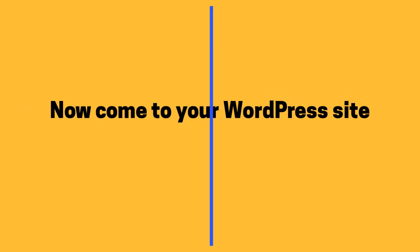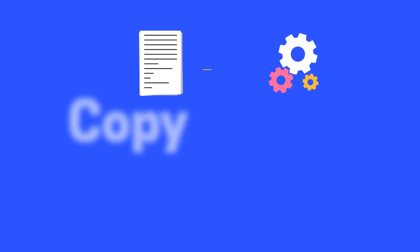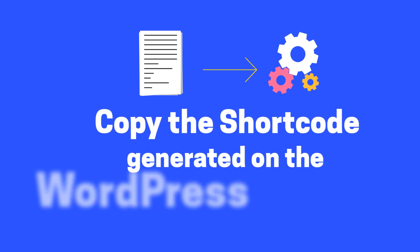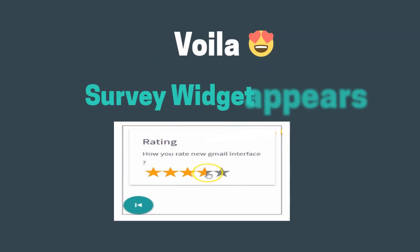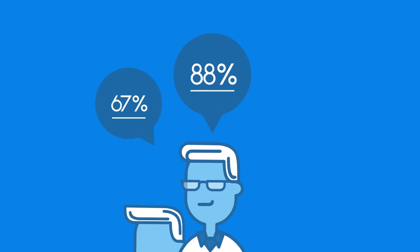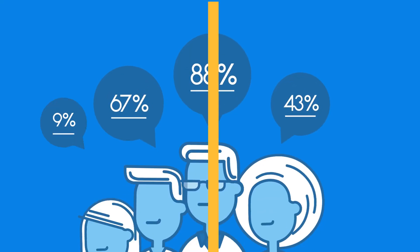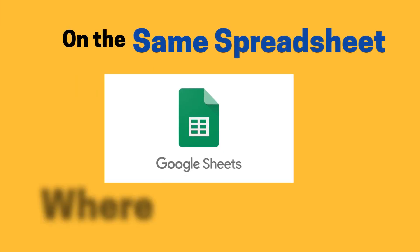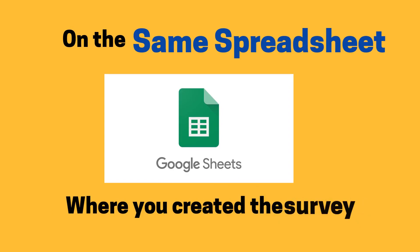Now come to your WordPress site, copy the shortcode generated on the WordPress settings page. Voila! The survey widget appears! All user responses are automatically saved on the same spreadsheet where you created the survey.